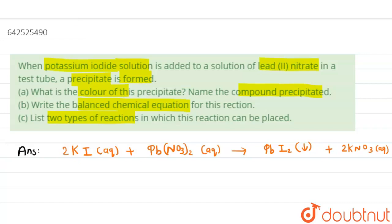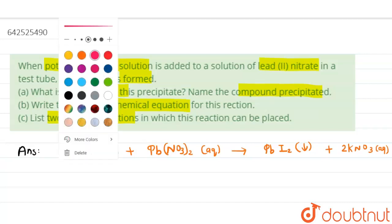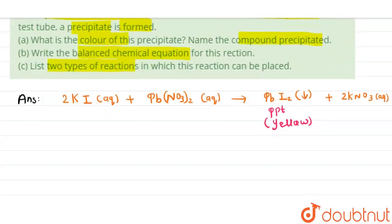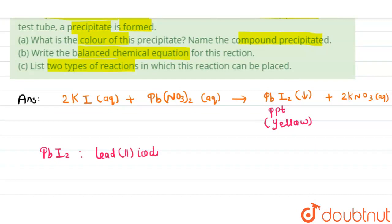So this PbI2 is basically a precipitate which is yellow in color, and the name of this yellow precipitate is PbI2 - it is lead iodide, which is a yellow precipitate.